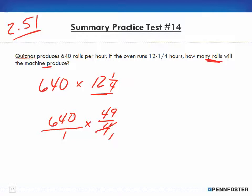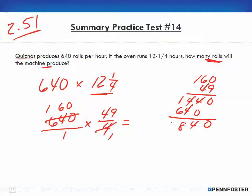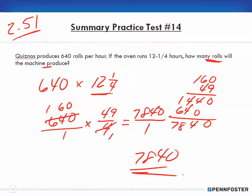4 can go into 4 once, 4 can go into 640—that's 160. If I multiply that out, 160 times 49: 0, 54, 4, 5, 14, 4, 0, 4 times 6 is 24, 6, 0, 4, 8, 7—so that's 7840 over 1 times 1 is 1. My answer is 7840. That's how many rolls they produce during that 12 and a quarter hour period.